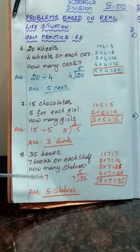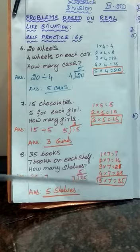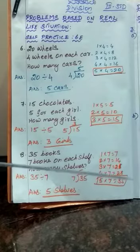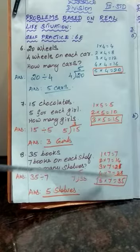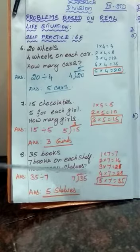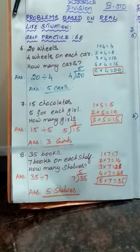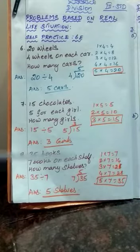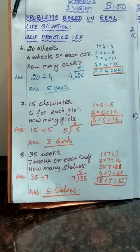In this one, which one is the dividend? 35 is the dividend and 7 is the divisor. You have to write the division 35 divided by 7, and write the 7 table at the side. In that 7 table you check how many times you multiply 7 to get 35. You multiply 5 times 7 to get 35. So 5 is the answer — write 5 as the quotient. So 7×5=35. The answer is 5 shelves. In 5 shelves the 35 books are arranged.